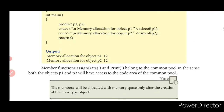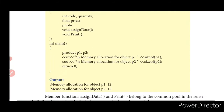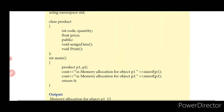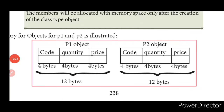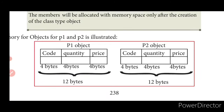Memory spaces are created with respect to attributes and not member functions. For each object P1 and P2: code takes 4 bytes, quantity takes 4 bytes, price takes 4 bytes — total 12 bytes. For P2 object, a separate space of 12 bytes is again created — 4 bytes each for code, quantity, and price.